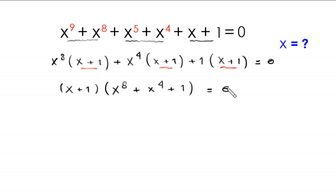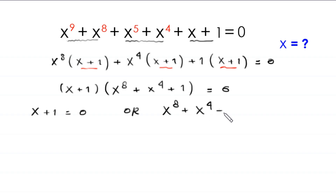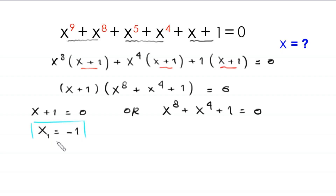From here, either x plus 1 equals 0, or x to the power 8 plus x to the power 4 plus 1 equals 0. From the first equation, we get x equals negative 1. This is the first solution of this equation. To find other solutions, we solve x to the power 8 plus x to the power 4 plus 1 equals 0.